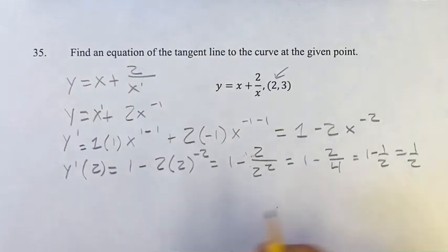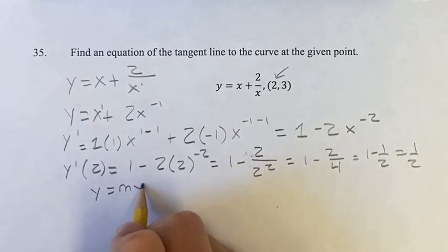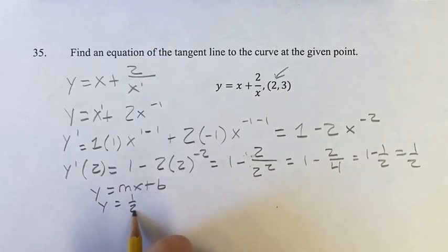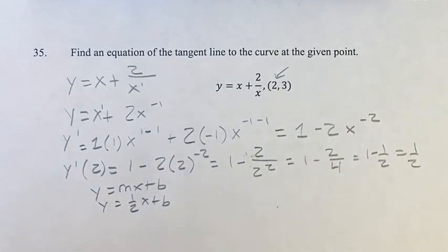Alright, so this is going to be the slope of our line. If you write y equals mx plus b, y equals 1 half x plus b. Now we can solve for b, because we know x and we know y, which will leave us with just one variable in the equation if we plug those in.